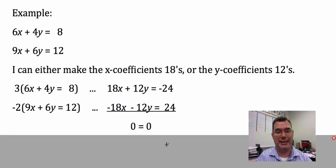Notice what happens when I add these together: I get 0 = 0. That's always true, so I have infinitely many solutions. If, on the other hand, I got something like 0 = 8, that's never true, so the system would have no solution.